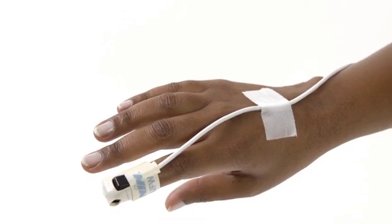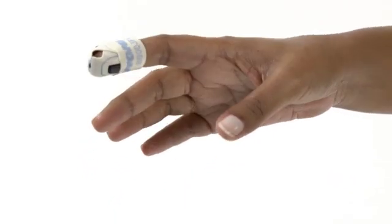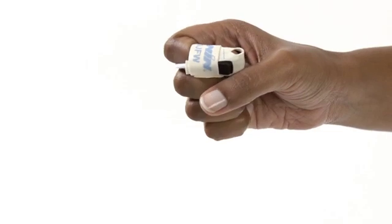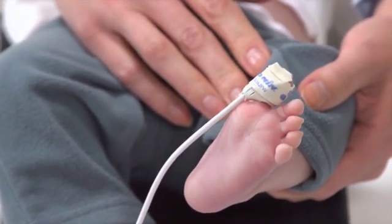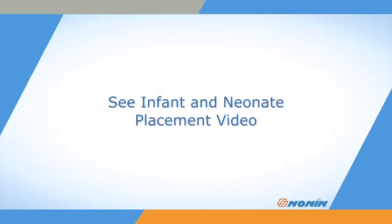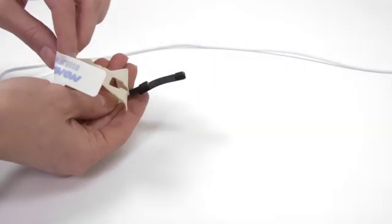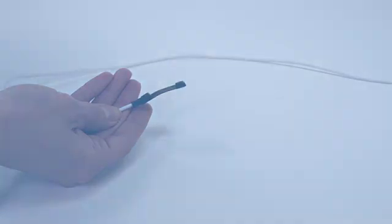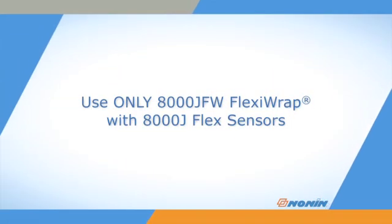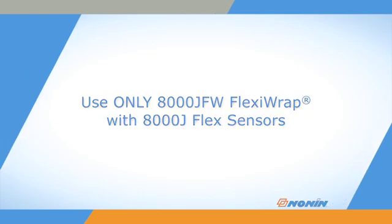The 8000JFW FlexiWrap is designed to secure the sensor in position on the finger without additional tape. Several sizes are offered for infant or neonate use as well. The FlexiWrap is for single use only and should be removed from the sensor and discarded after each use. The 8000J Sensor should only be secured with the 8000JFW FlexiWrap. Other adhesives or tapes will not properly position the sensor and may cause damage to it.